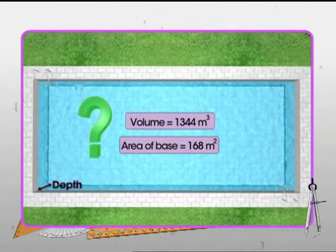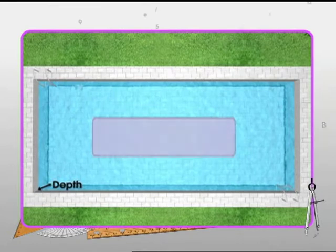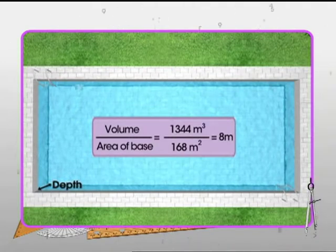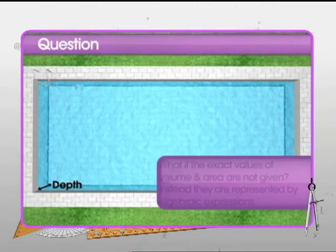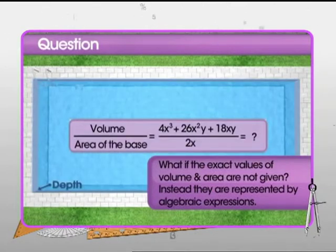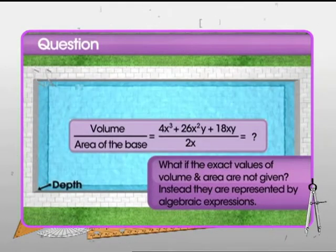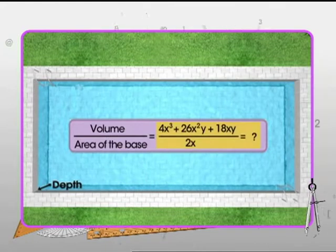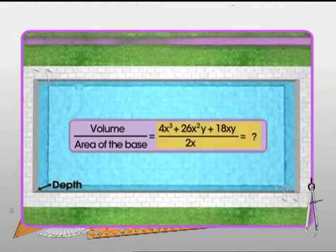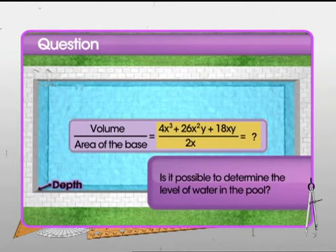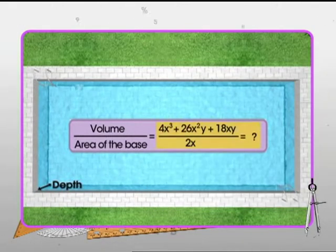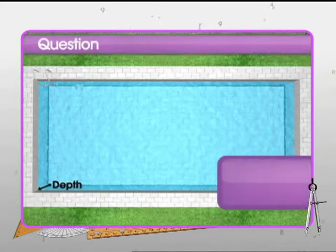Now if just the volume and area of base is known, will it be possible to find the depth of water in the pool? Well, yes, by the division operation. But what if the exact numeric values of volume and area are not given? Instead, they are represented by an algebraic expression or polynomial. Then can we still find the depth of water in the pool?